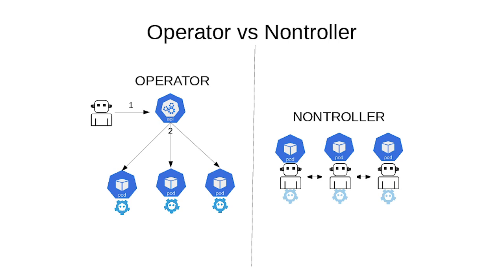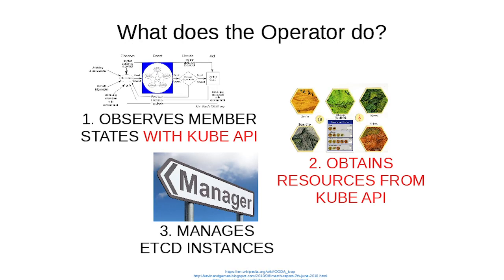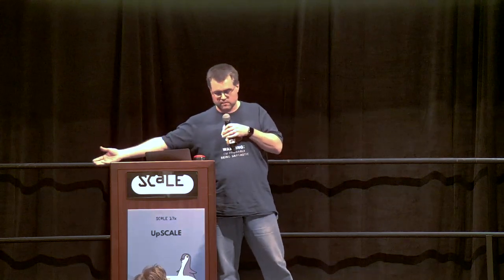So how do we move that? We take a look at what the operator is really doing: it observes membership via service discovery with the Kubernetes API, it obtains resources from the Kubernetes API, and then it manages those etcd instances. If Kubernetes isn't there, we still need to do a couple of these items outside of Kubernetes, but we can still use that intelligence to do the rest of it inside.